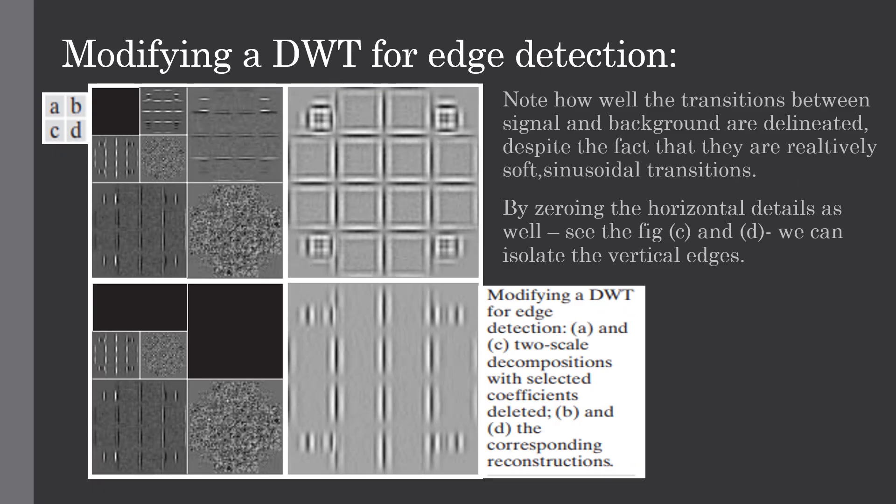How is image processing done through 2D wavelet transform? The basic approach is to compute 2D wavelet transform on an image first, alter the transform and compute the inverse transform. For example, this image shows the net effect of computing the inverse wavelet transform using these modified coefficients is its enhancement. Note how well the transitions between the signal and background are delineated despite the fact that they are relatively soft sinusoidal transitions.